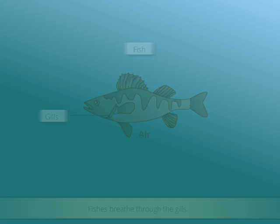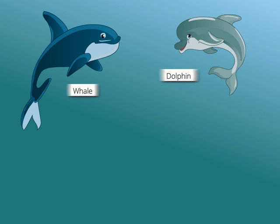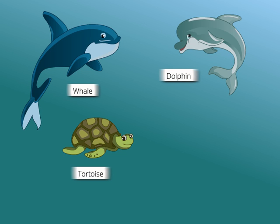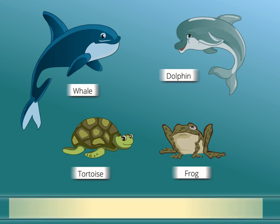However, animals like whales, dolphins, tortoises and frogs also live in water, but they do not have gills. They breathe through their lungs.